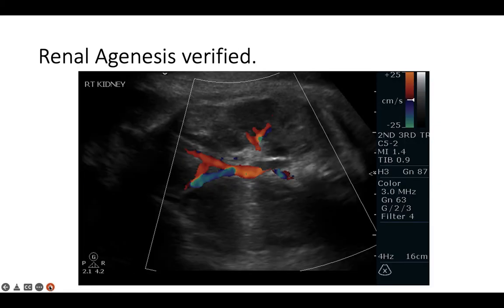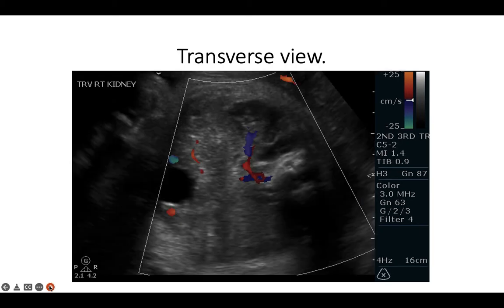Using this technique, you can see there's only one renal artery branching from the aorta in this image, raising the suspicion of renal agenesis. Here it is in transverse, but be very careful when you're in this view. As you can see, the spine will sometimes shadow, making the diagnosis harder, which is why I prefer the coronal view.